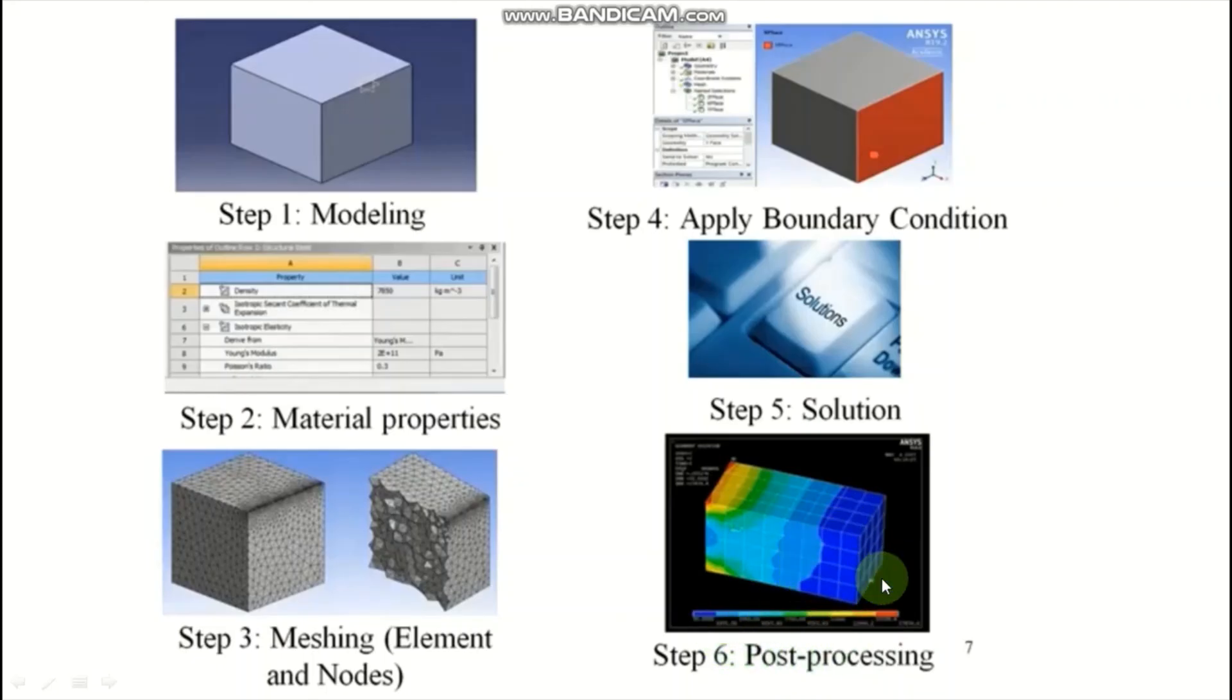Here, color zone is nothing but the contour plot at the bottom series shown in this image. Color line indicates the range of value of stresses. Blue color to red color. Blue color zone indicates the minimum stress induced in the body and red color zone indicates the maximum stress induced in the body.